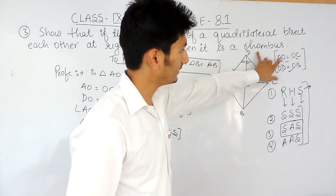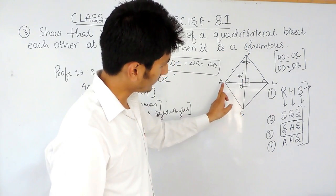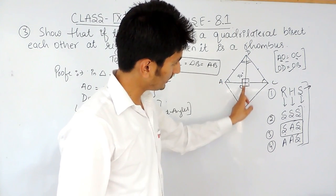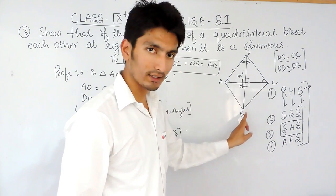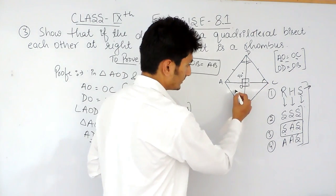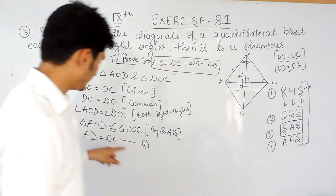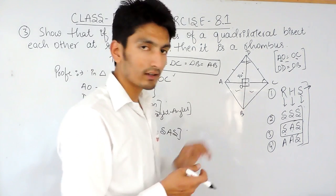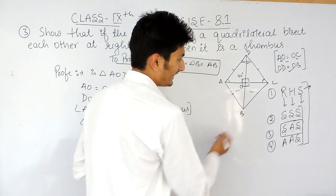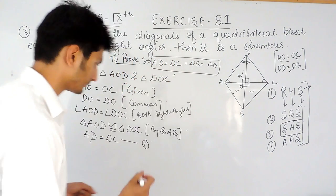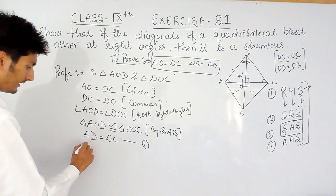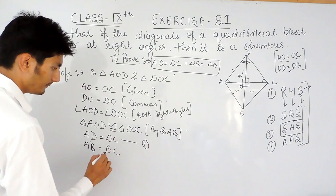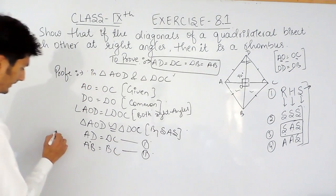Similarly, in triangle AOB and triangle BOC, you can confirm that these two triangles are congruent by the same SAS property. If these two triangles are congruent, then by CPCT, AB equals BC. This is our second equation.